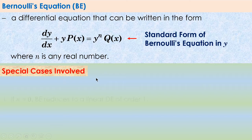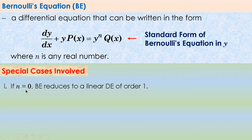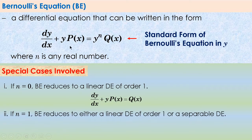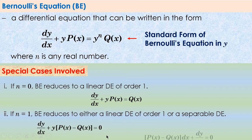Special cases involved: If N is equal to 0, this Bernoulli's equation reduces to a linear DE of order 1. If N is equal to 1, this Bernoulli's equation reduces to either a linear DE of order 1 or a separable DE.